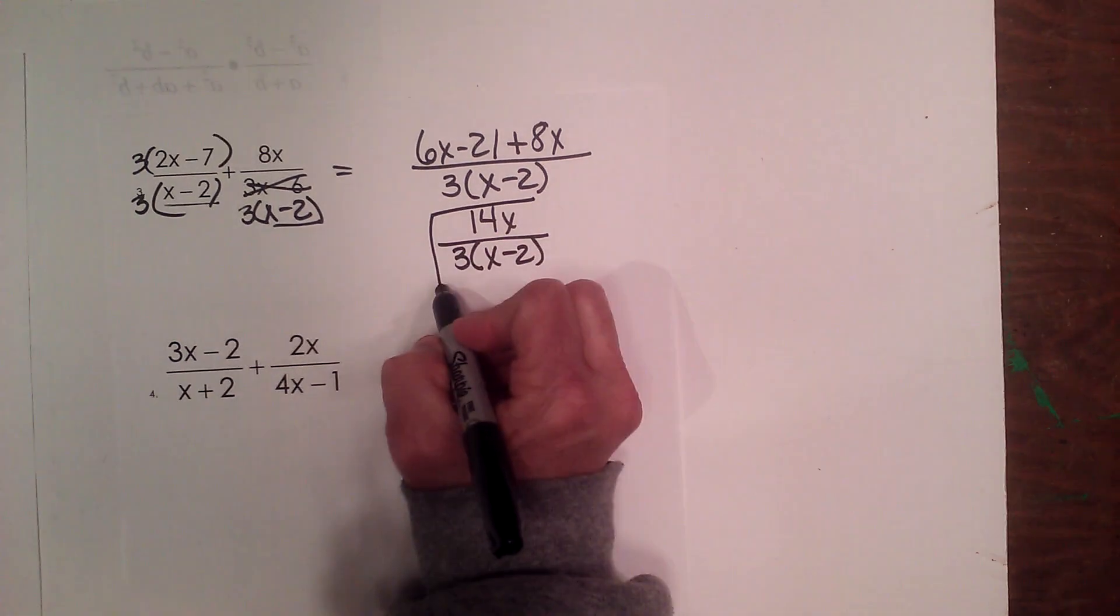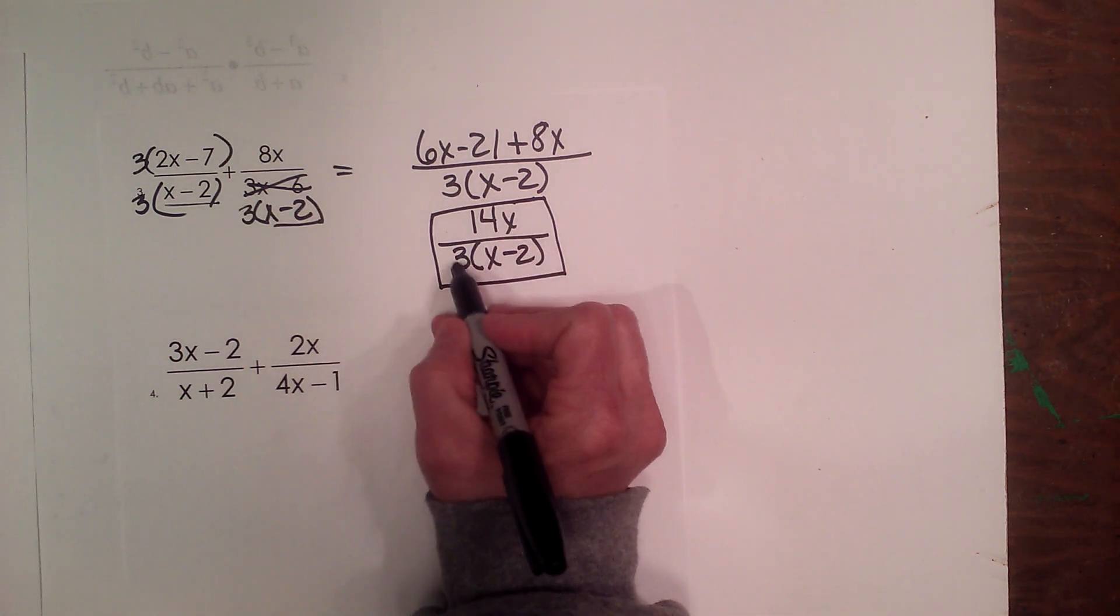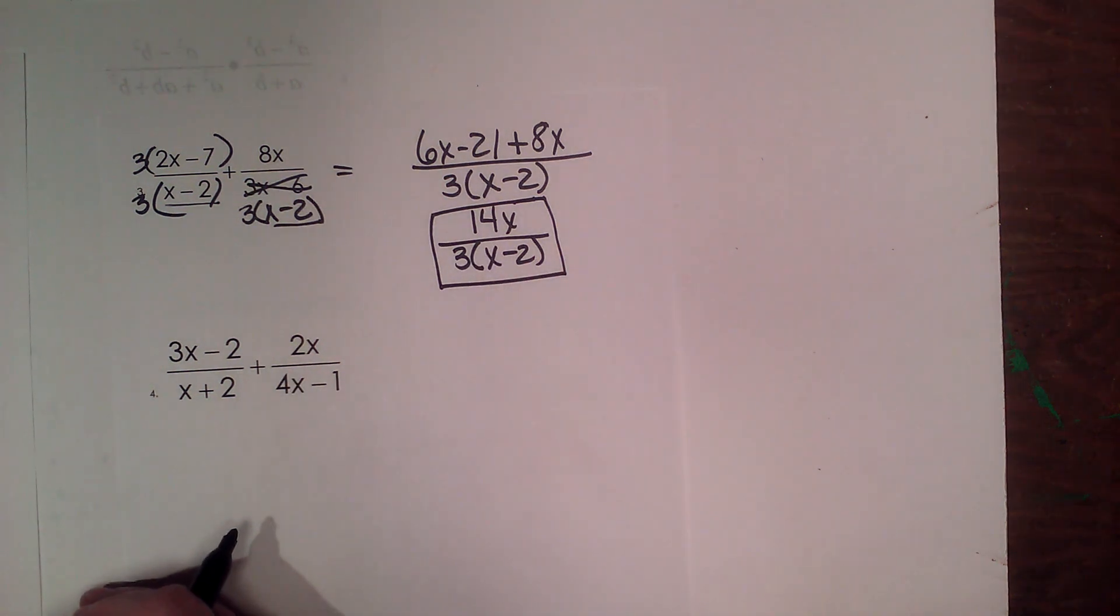Now at this point, I'm finished because there's nothing I can simplify. 14 is not divisible by 3, therefore I'm done.